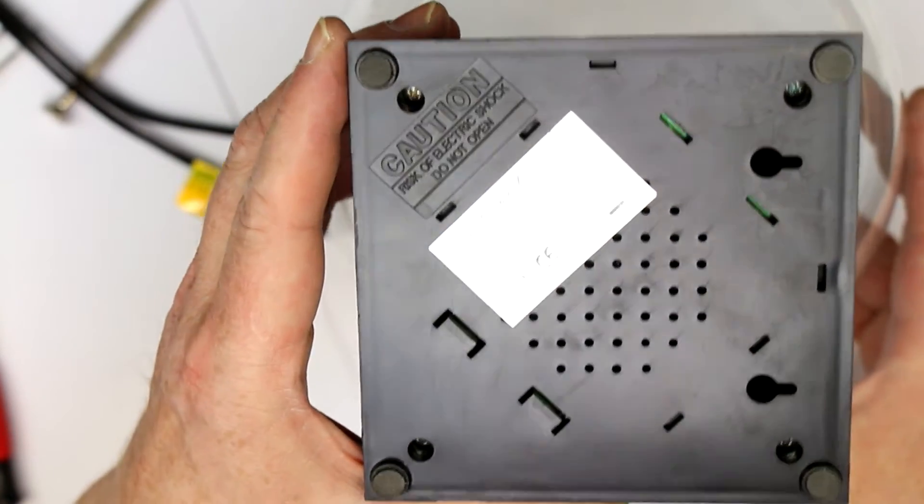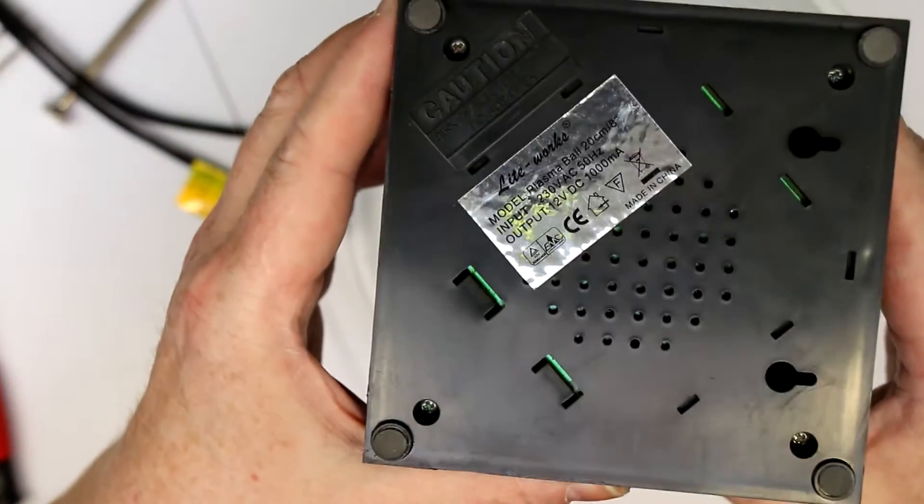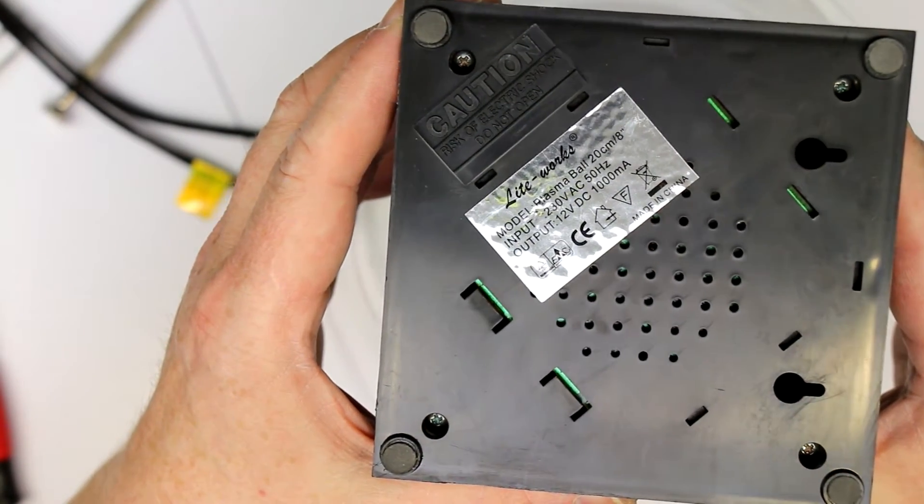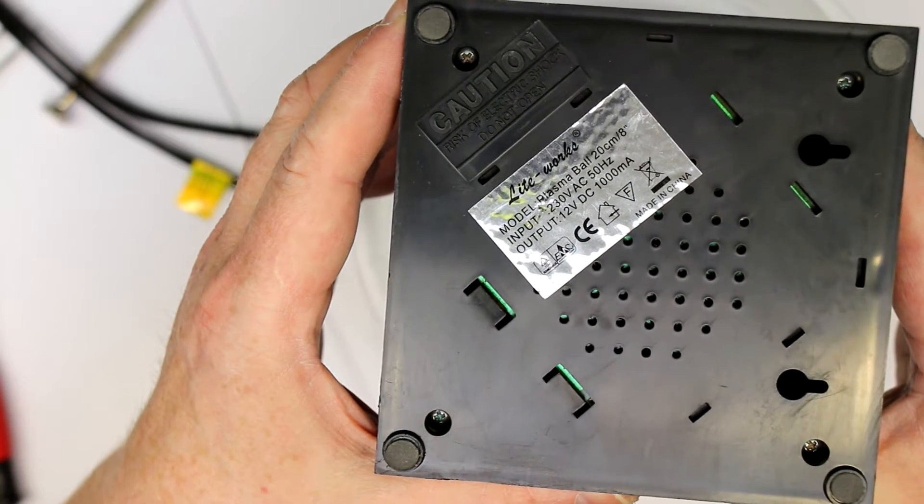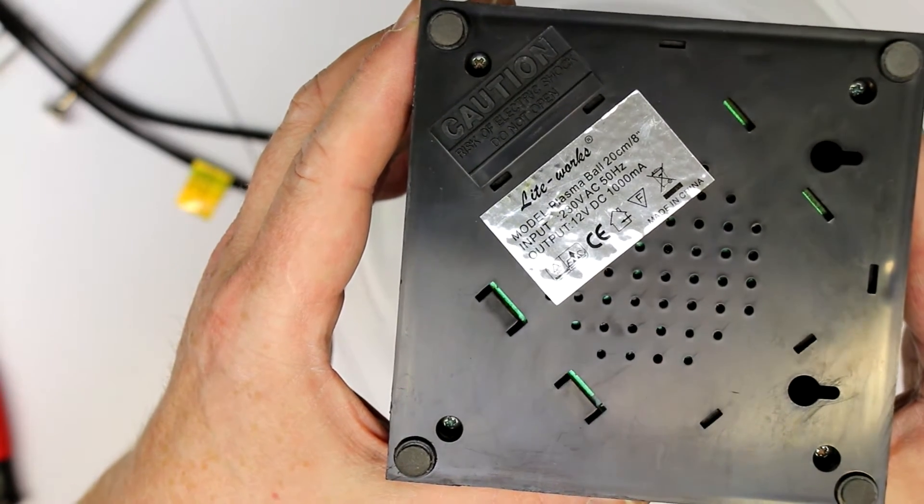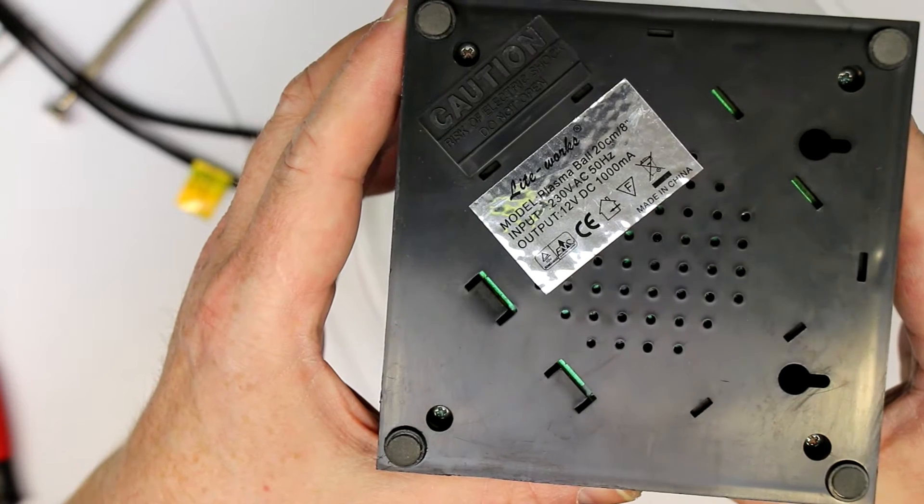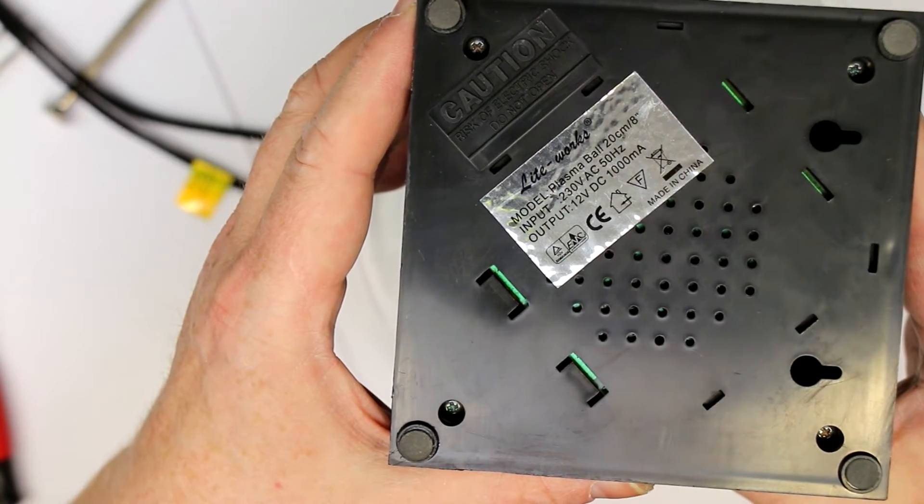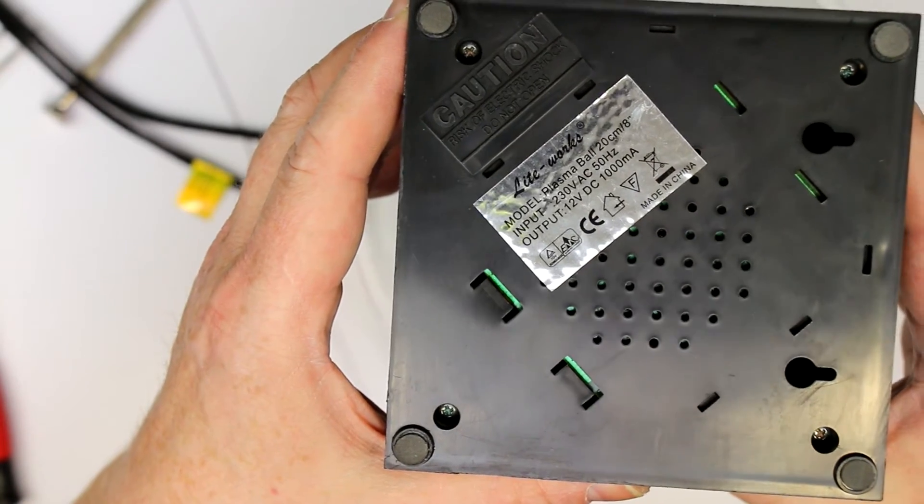Here we are with the underside of the plasma ball. Let's see what we can read on the little sticker. Plasma ball, 20 centimeters, 8 inch input, 230 volts AC, 50 hertz. Ah, that is for the wall wart adapter, 12 volt DC, 1 amp.